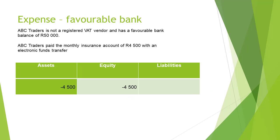Let's look at an example. ABC Traders is not a registered VAT vendor and has a favorable bank balance of 50,000 rand. ABC Traders paid the monthly insurance account of 4,500 rand with an electronic funds transfer. Insurance is classified as an expense.